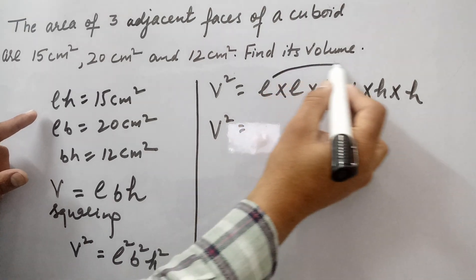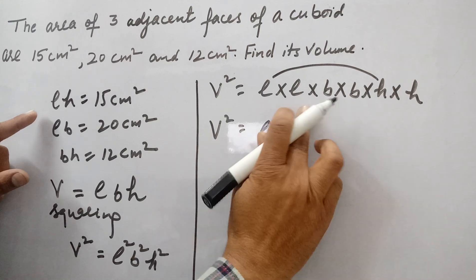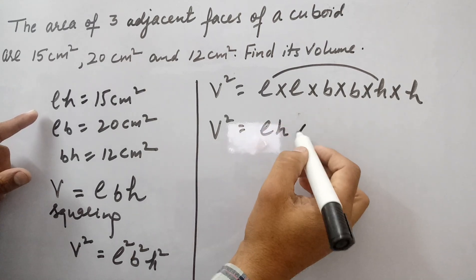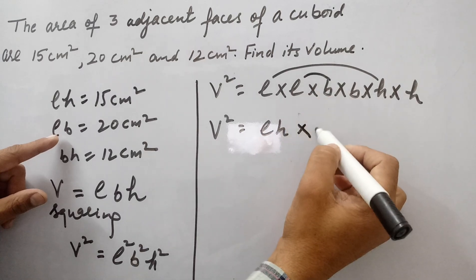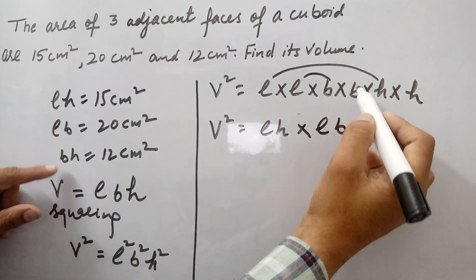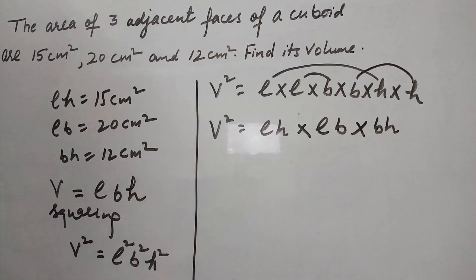So we will join this L and H, not plus, multiply. We will join this LB also. So LB joined, and then we will join this BH. So we will rearrange these in this form.